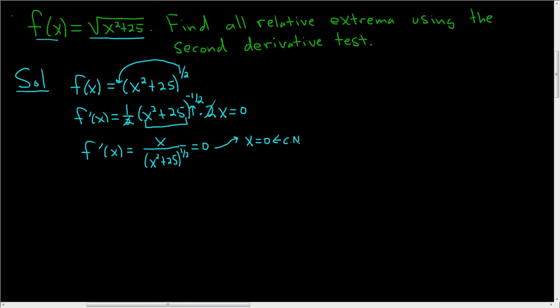Now we have to take the second derivative. Step one of the second derivative test was finding the critical numbers. We did that, and now we'll take the second derivative. So f double prime of x, we'll use the quotient rule.